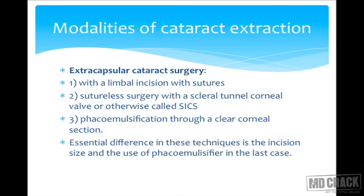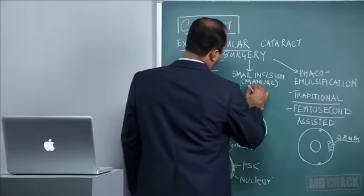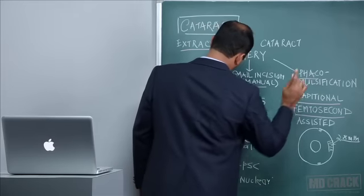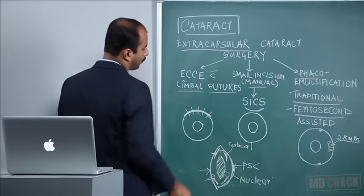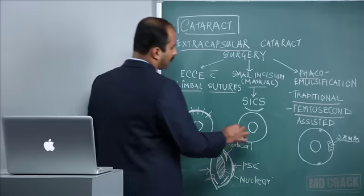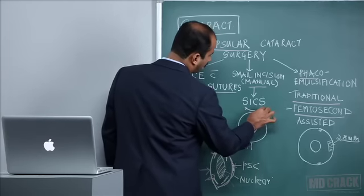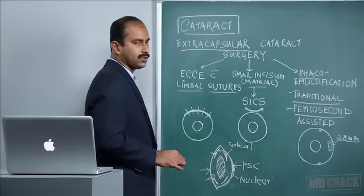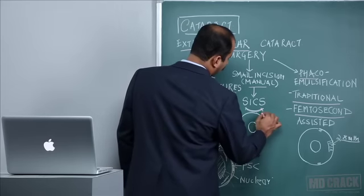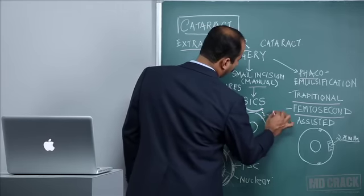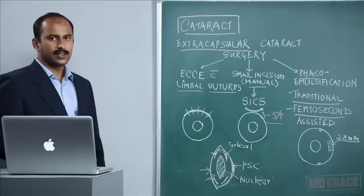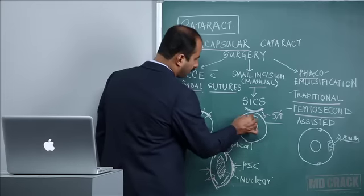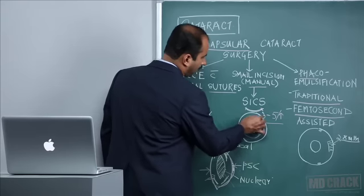The three modalities of cataract surgery are: extracapsular surgery with limbal sutures, manual small incision surgery, and FACO. The essential difference is only the incision size. ECCE with limbal sutures has a large limbal incision around 120 degrees of arc. Small incision cataract surgery uses a curvilinear scratch incision on the sclera of partial thickness, ranging 3 to 5 millimeters. In this technique, the entire endonucleus is delivered out of the eye in one piece.